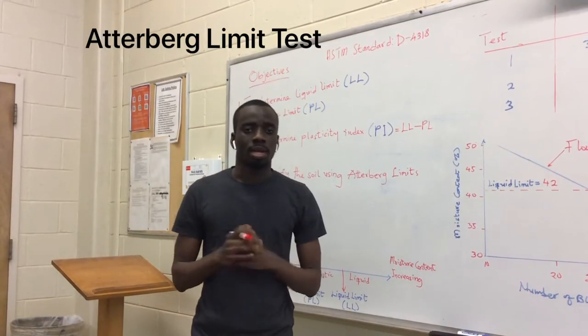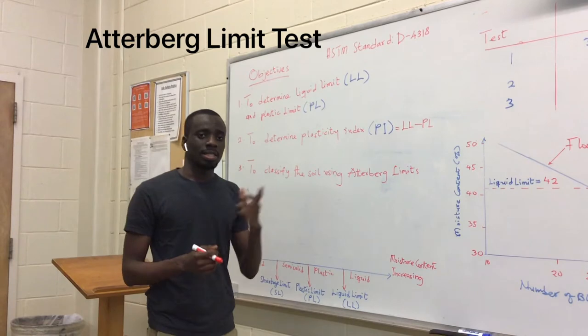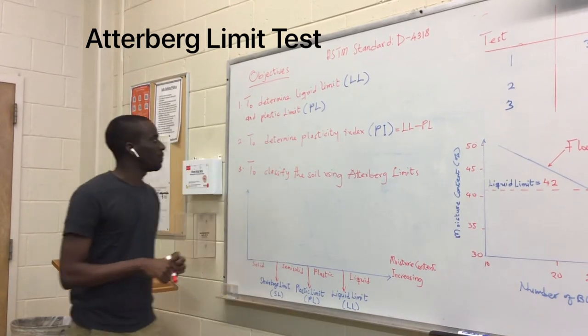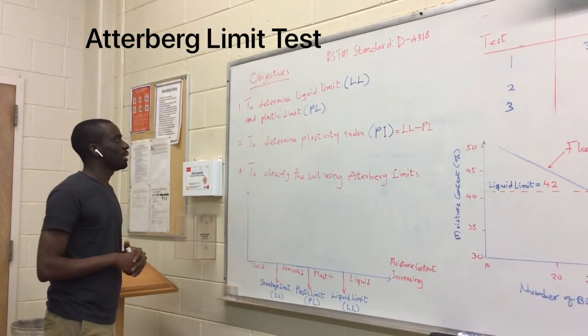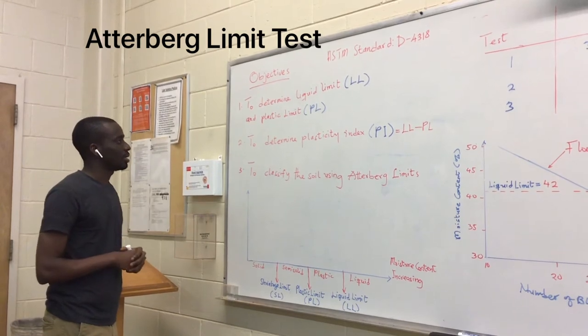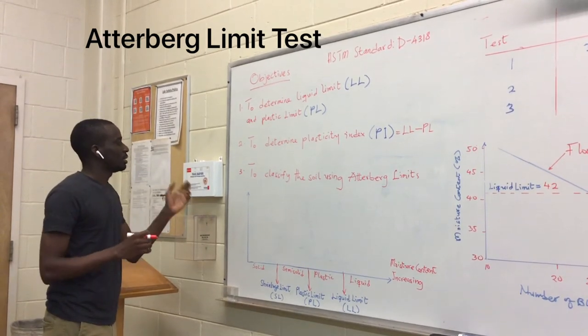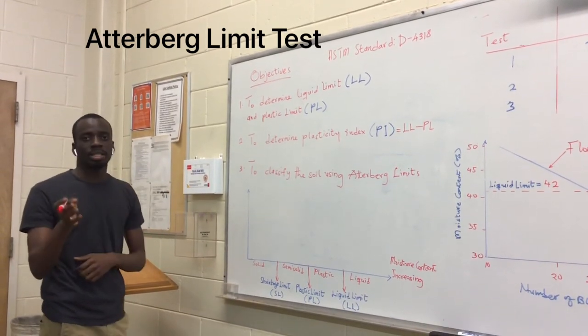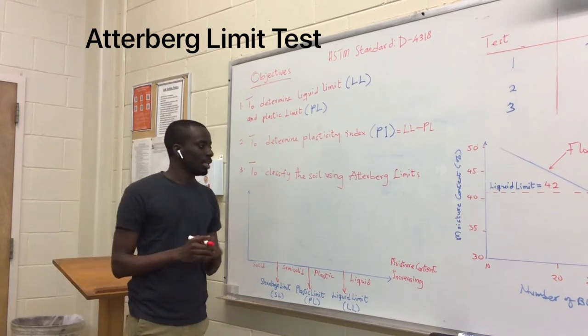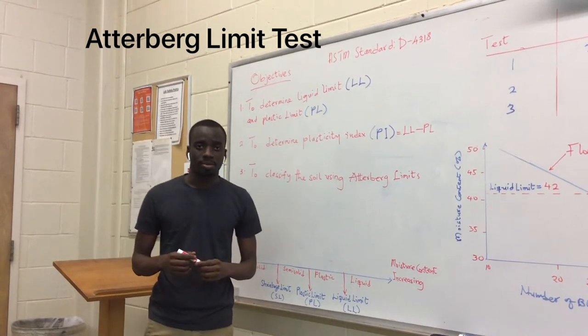Today we are going to do Atterberg Limit Test, and these are the objectives for today. The first objective is to determine the liquid limits and the plastic limits of the soil sample. The second objective is to determine the plasticity index. Then the third objective is to classify the soil using the Atterberg Limit.